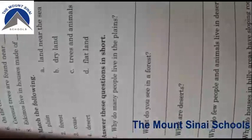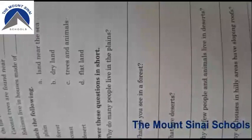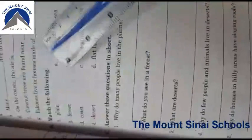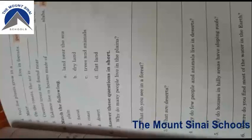Now there is a matching-the-columns exercise. Two columns are given about plains, forests, and deserts. You match with a line to the correct description. Plain — it is a flat land. Forest — trees and animals. Coast — a land near the sea. Desert — it is a dry place. Match each to the corresponding description.